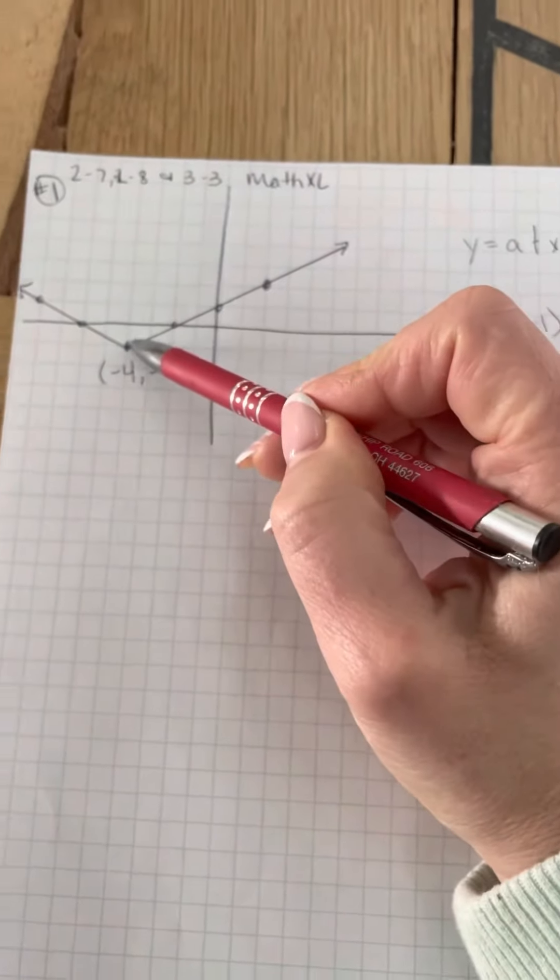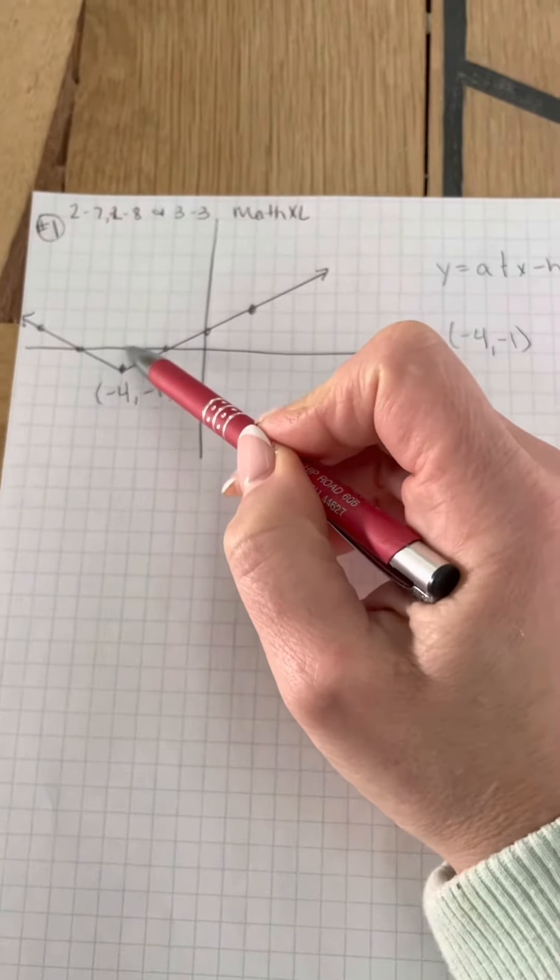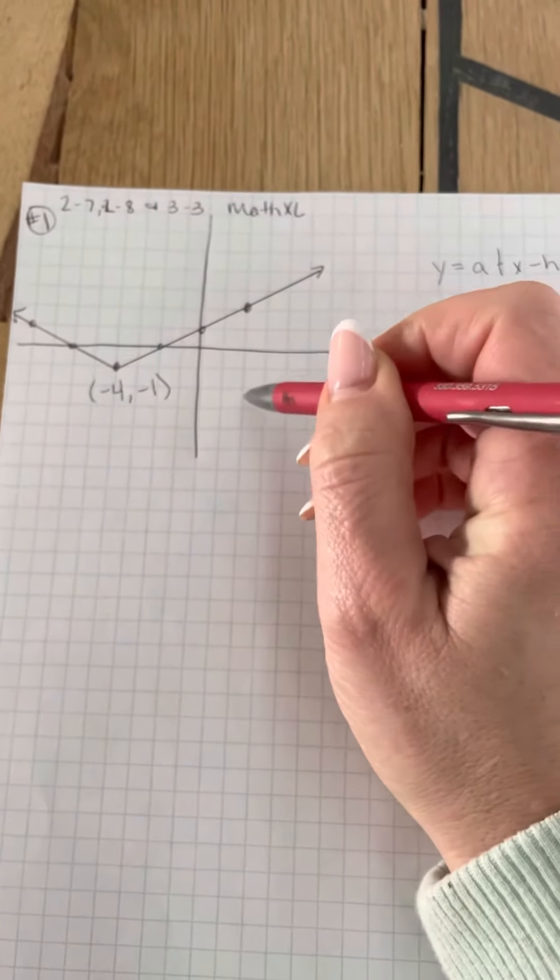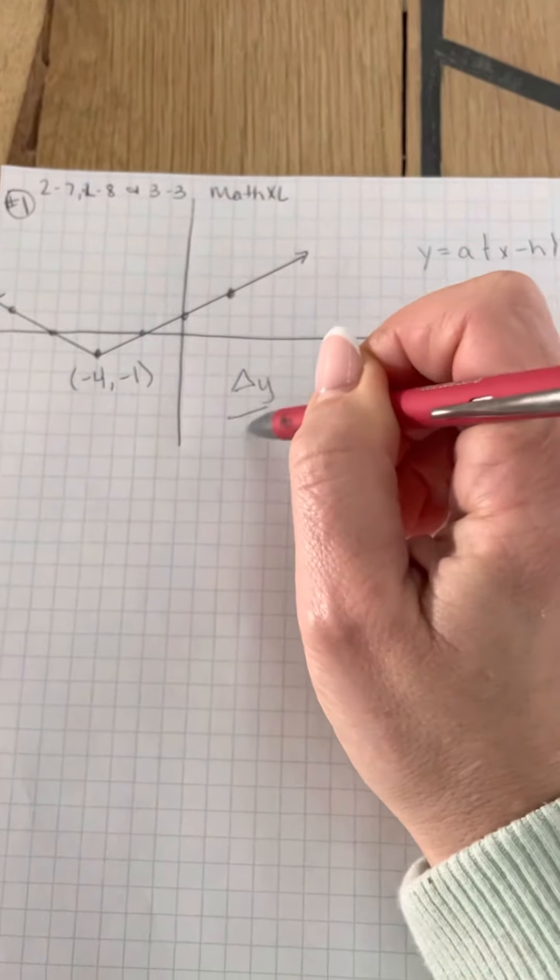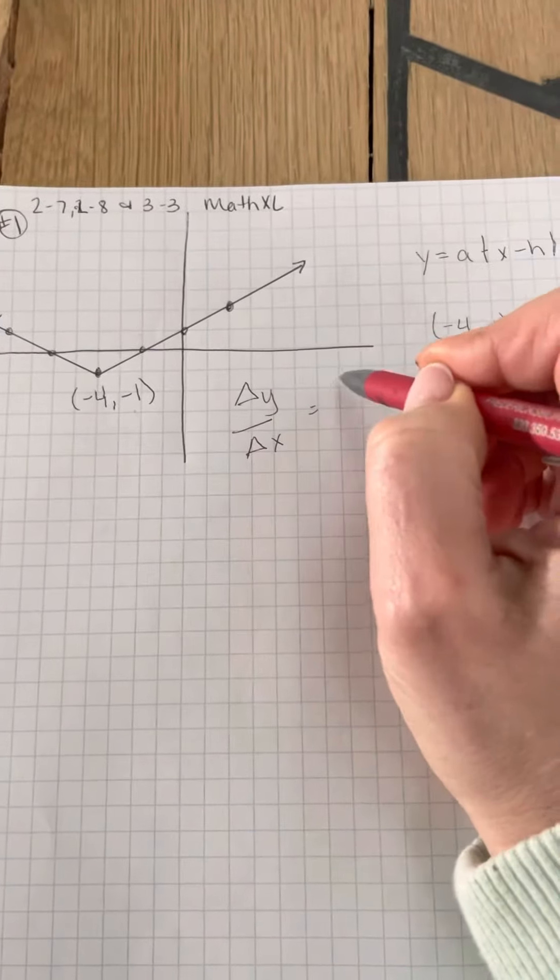And then I have to look at my slope. Now since it's a regular V, that means it's going to be positive, and we're going up one over two. Remember, it's always the change in Y over the change in X. So it's going to be up one, so one is on the top,